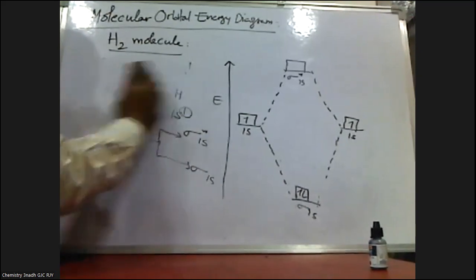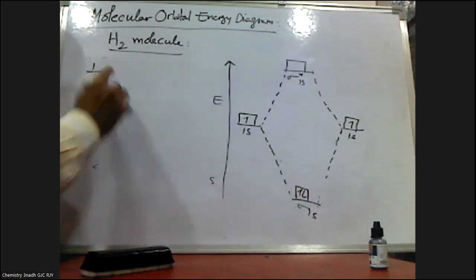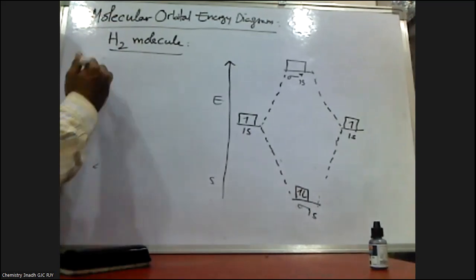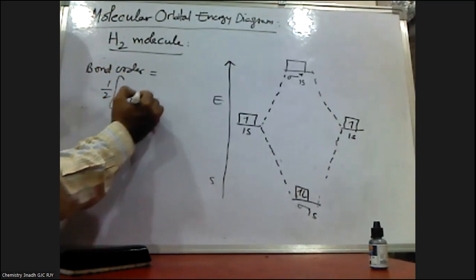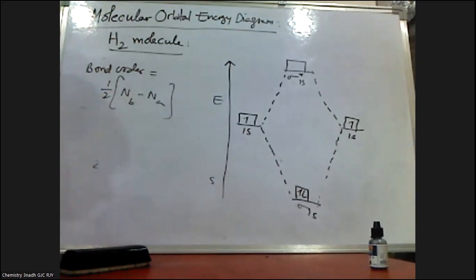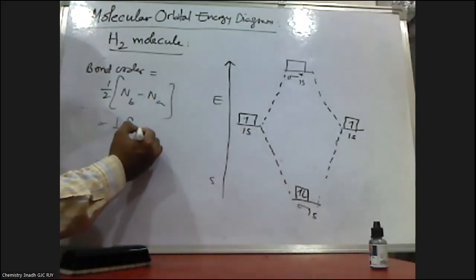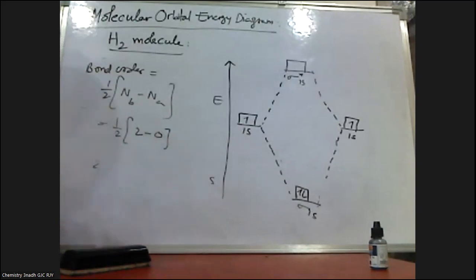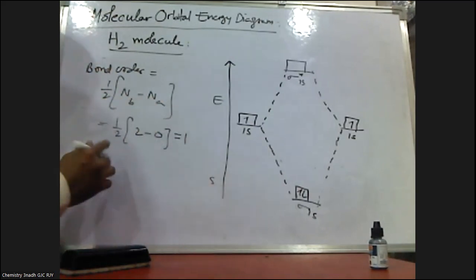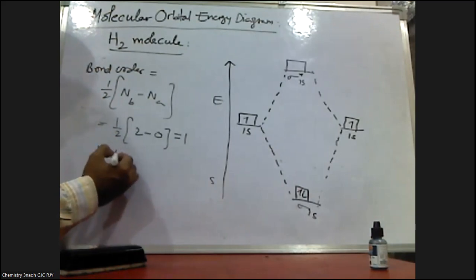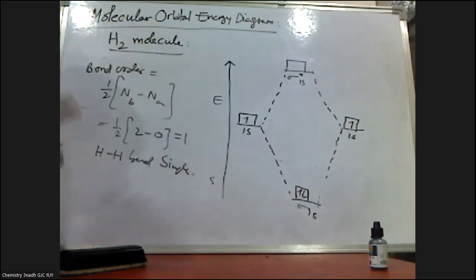Now let me calculate the bond order. Bond order is half the difference between the number of electrons in bonding molecular orbitals minus the number of electrons in anti-bonding molecular orbitals. Here, there are two electrons in the bonding molecular orbital and zero electrons in the anti-bonding molecular orbital. That's why the bond order is 1. So there exists one H–H single bond in the H₂ molecule, and the bond order is 1.